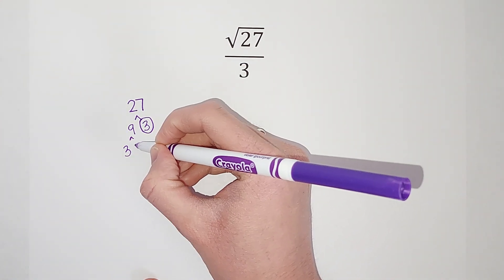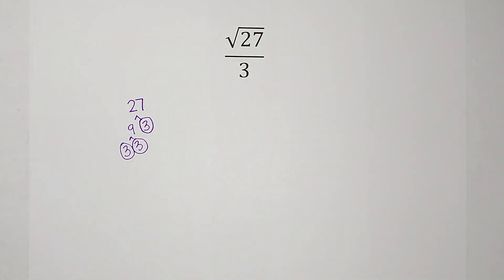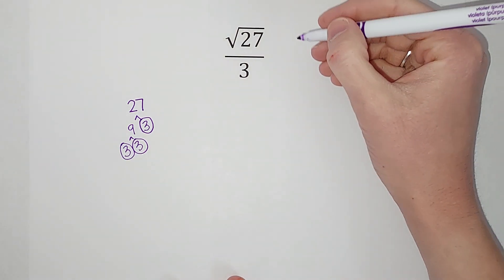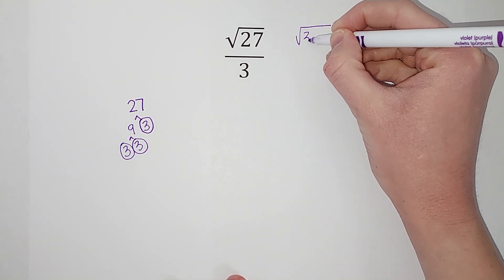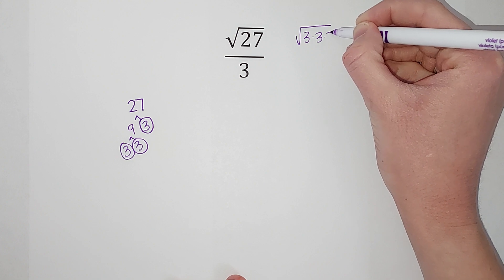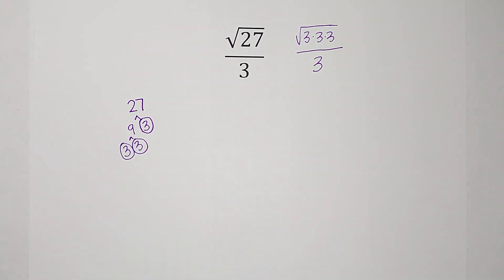And so I'm gonna do that with 9 too. 3 times 3, breaking it down, those are prime numbers. So what this tells me is 3 times 3 times 3 gives me 27. So I can write 27 as 3 times 3 times 3, and remember we're still over this 3 - it's still a fraction, we're working on it.